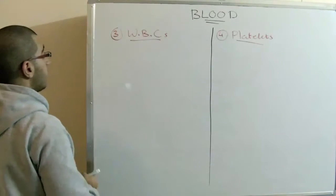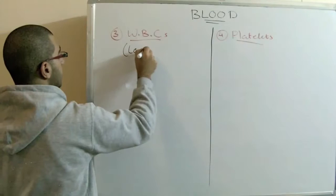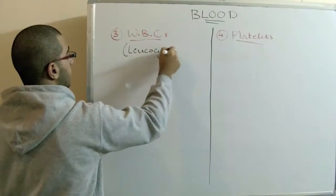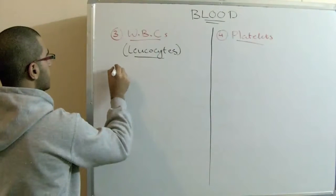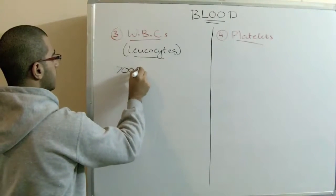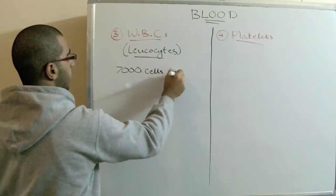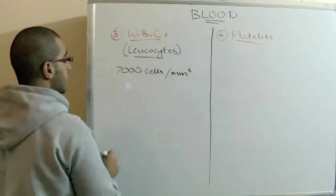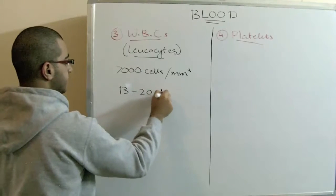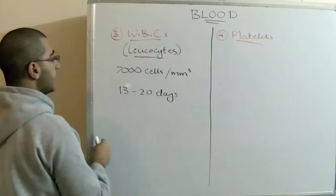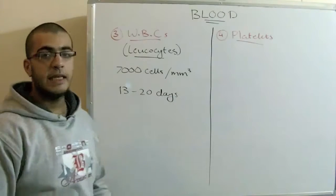The white blood cells are also called the leukocytes. They are about 7,000 cells per cubic millimeter. They live from 13 to 20 days and their number increases during the diseases.